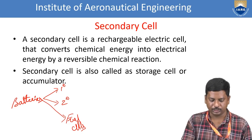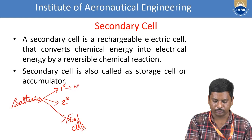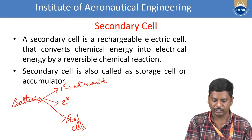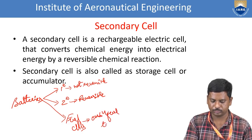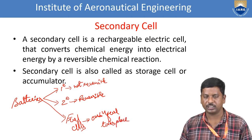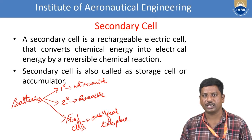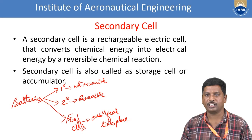In the case of primary cells, the cell reaction is not reversible. In secondary cells, the cell reaction is reversible. In fuel cells, oxidation of the fuel takes place. According to the definition of electrochemical cells, both reactions — chemical to electrical and electrical to chemical — are possible.